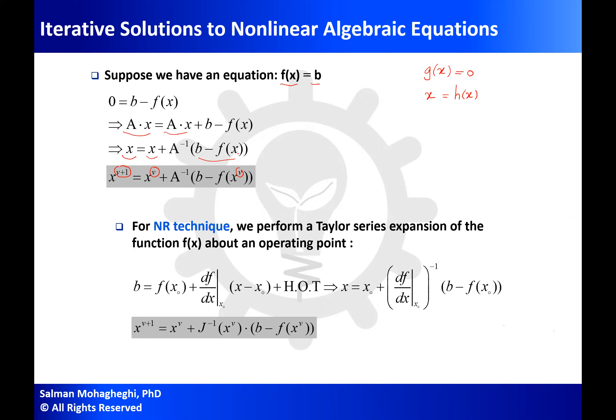If I want to expand f(x) about a point x(0), it will be of the form f(x₀) plus the derivative of that function with respect to x evaluated at x₀ times (x - x₀), and this continues with the second derivative term, third derivative term, and so on — referred to as the higher-order terms. This whole series expansion equals b.